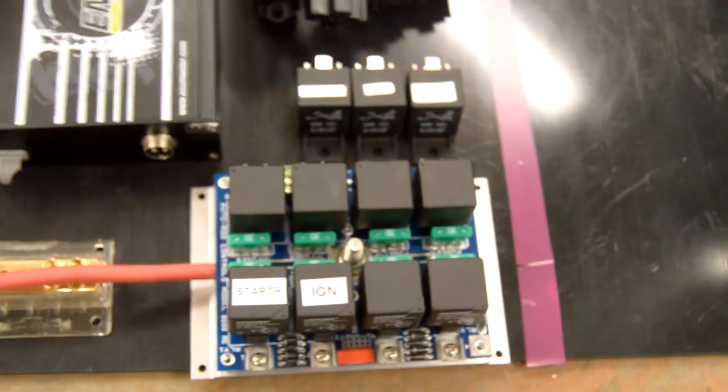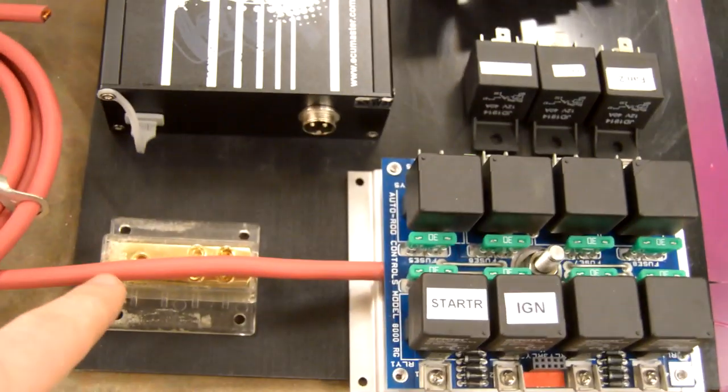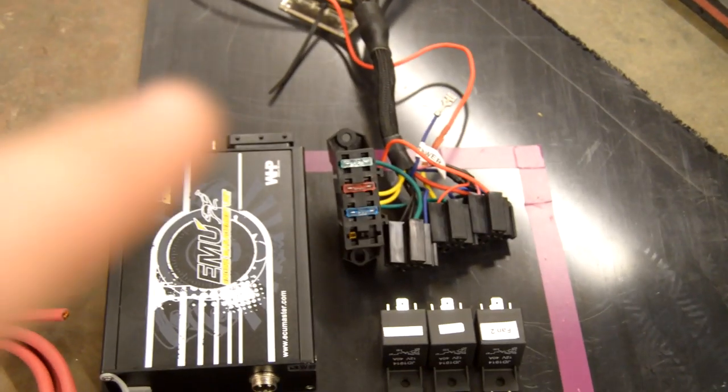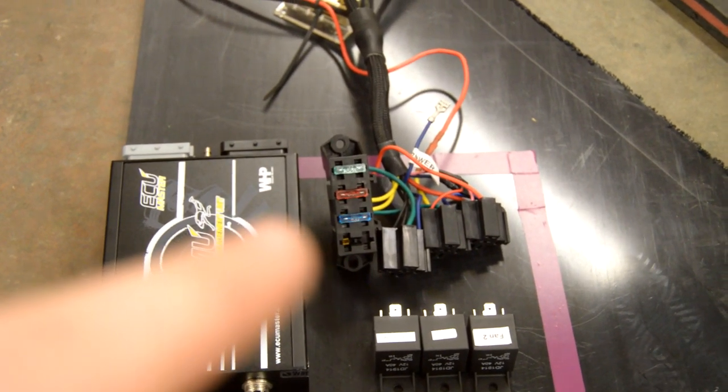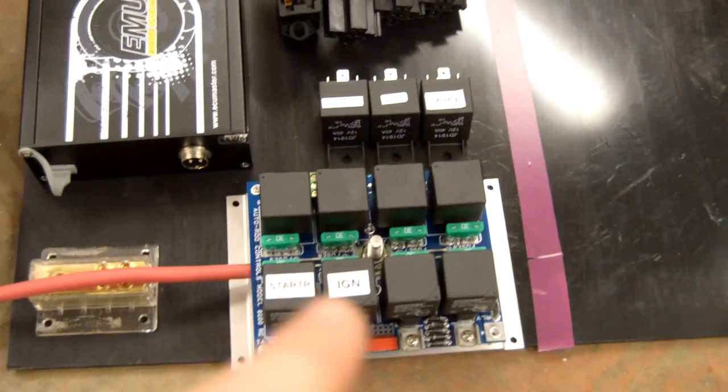I've got these distribution blocks here that's going to provide power to a lot of things. I've got another one for a ground, and then this little harness here came with the Wiring Specialties harness that's going to be for my two fans and fuel pump and everything else.